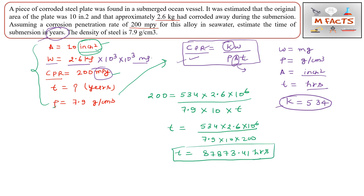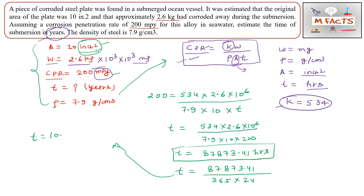The result 87,873.41 is in hours, but the question asks for years. To convert: divide by 365 days per year and 24 hours per day. This gives t ≈ 10.03 years. This is a very simple calculation — the key thing to get right is the units and the constant k value.